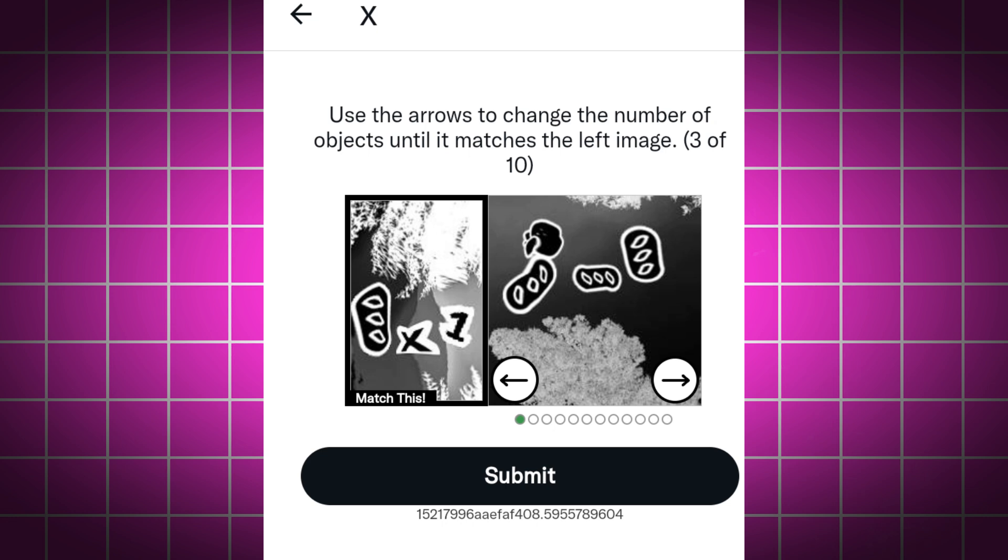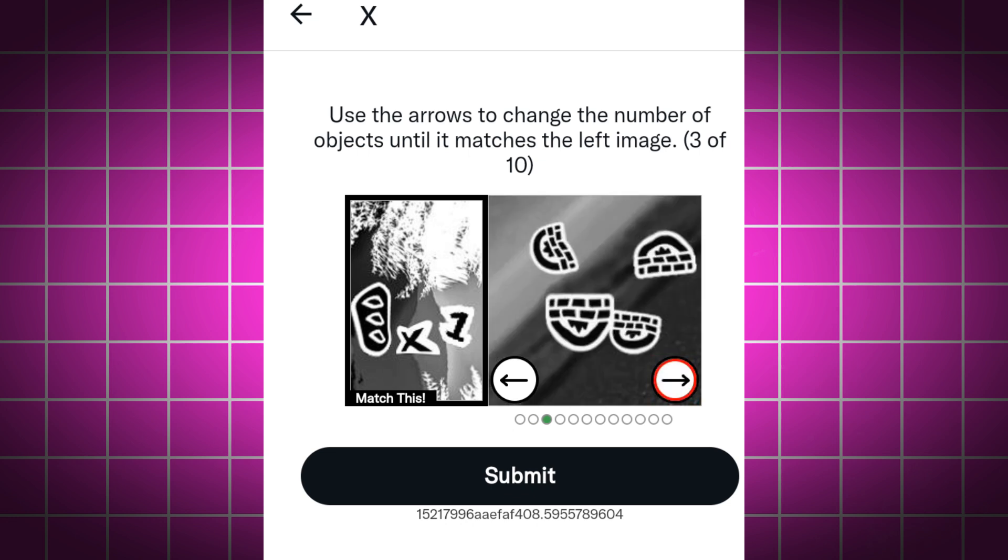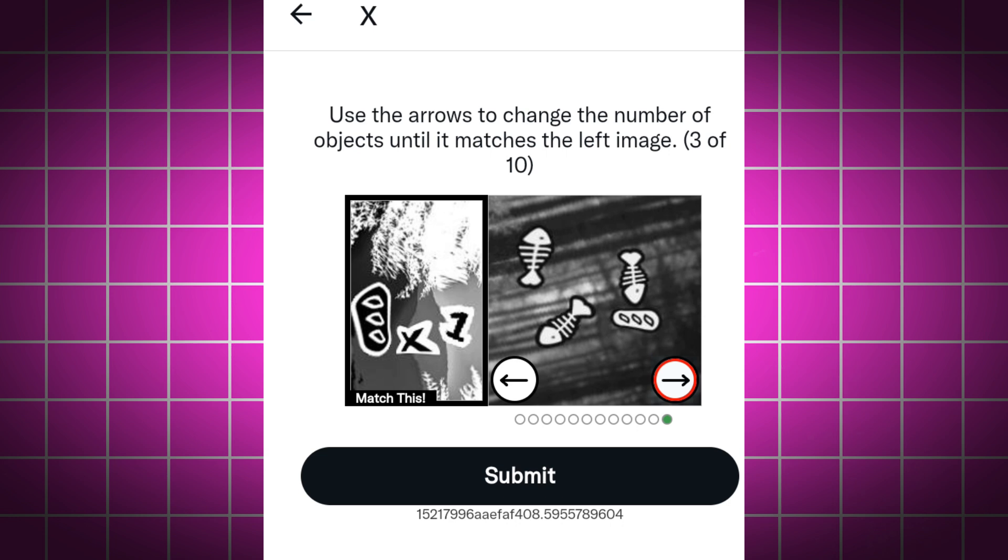And in the third image we can see the same shape like before, and you have to find now just one. So let's scroll the image and find it. And here's the one. So step 3 done.